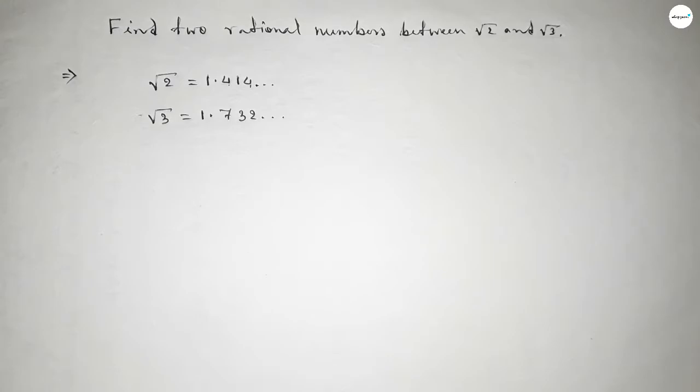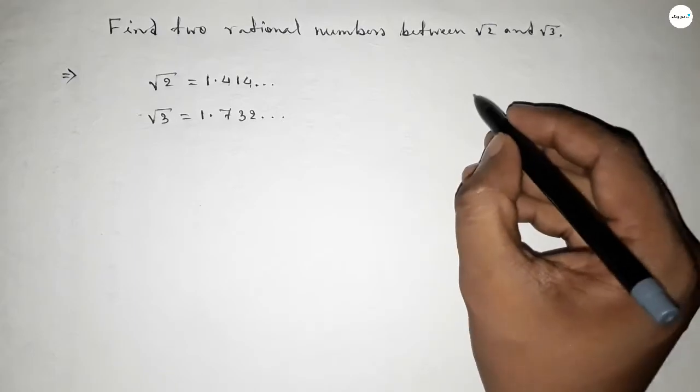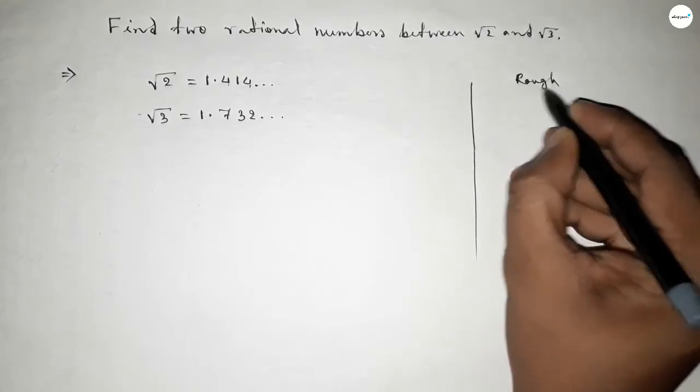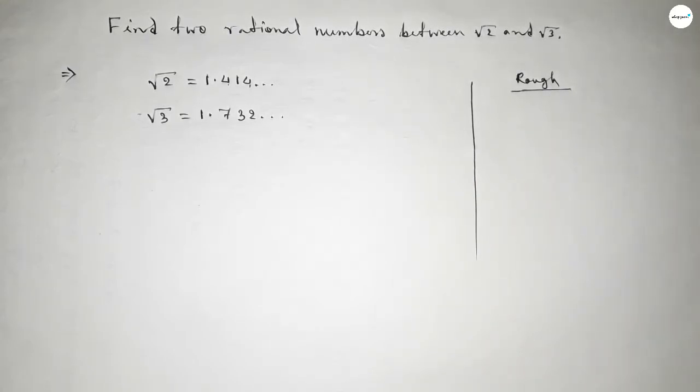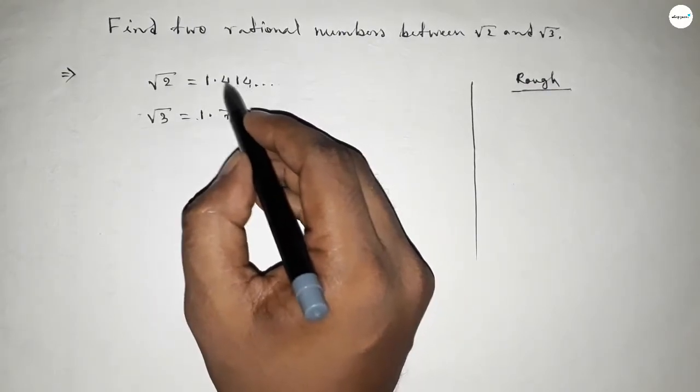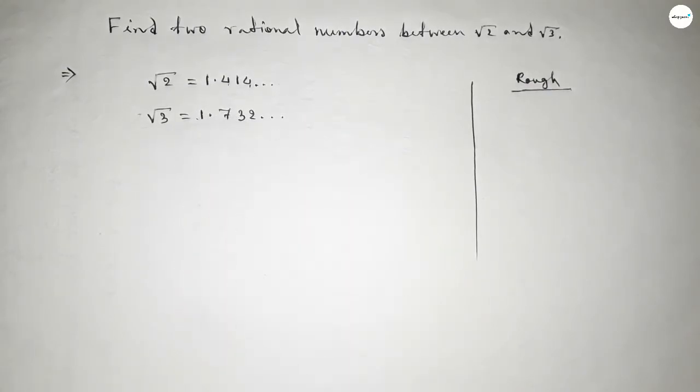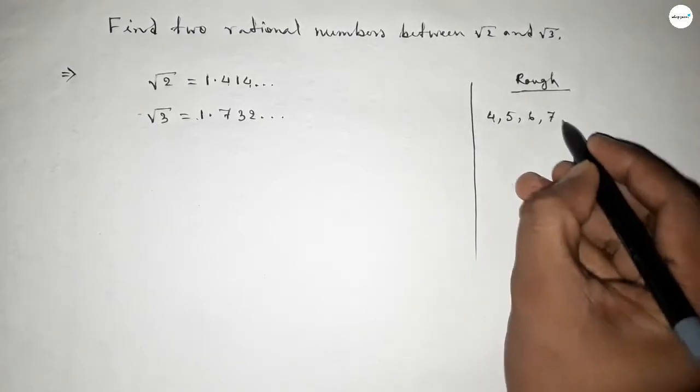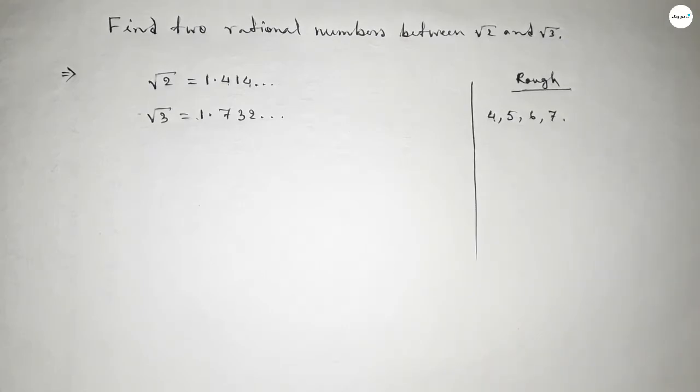Okay, now roughly discussing some calculation here. Both are one and same. So we can find between 4 and 7 digits, we can find two digits, 5 and 6. And by these two digits we can form infinite number of rational numbers, but here we need only two rational numbers.